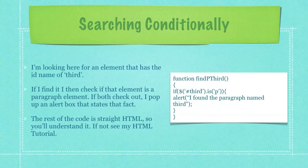I'm looking here for an element that has the ID name of third, and I then check if that element is a paragraph element. If both check out, I pop up an alert box that states that fact. The rest of the code is straight HTML so you understand it, and if you don't, you should definitely check out my HTML tutorial.